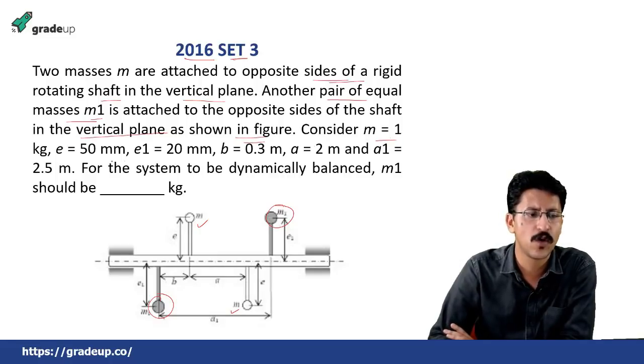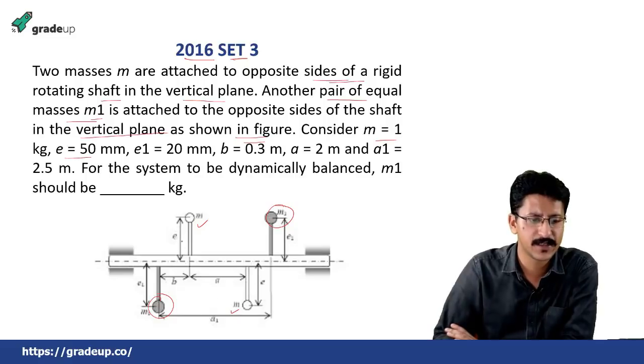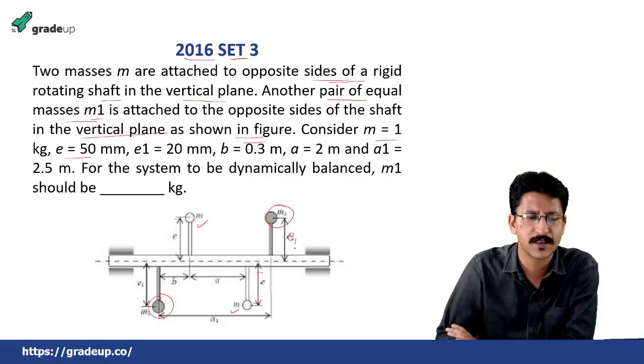Consider m equal to 1 kg, e equal to 50 mm, this is e, this is e, this is e and this is e, means the m are attached at a distance of e and m1 are attached at a distance of e1. This is e1, maybe this is just somewhat blurred for you, m, m1, m, m1, e.